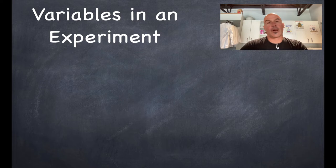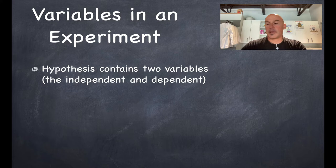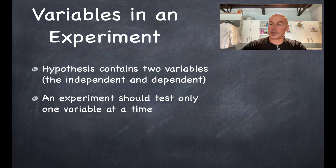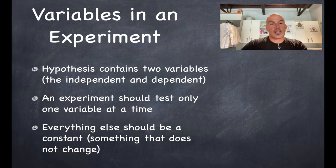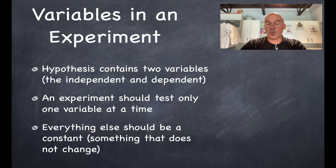All right, so variables in an experiment. Your hypothesis contains two variables. These are the independent and the dependent variable, as we just mentioned. So an experiment should only test one variable at a time. Everything else should be a constant, something that does not change. And the reason you want to only test one variable at a time is because if you have multiple variables, how do you know which change caused the effect?